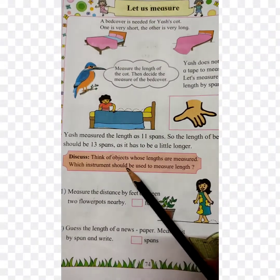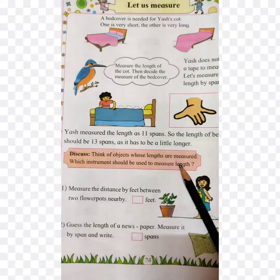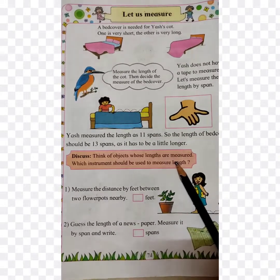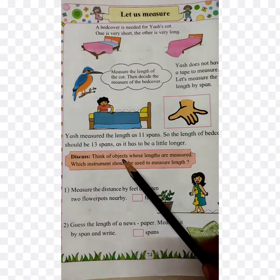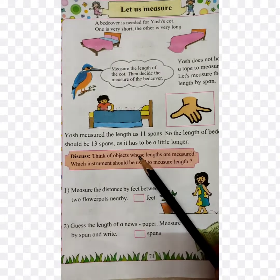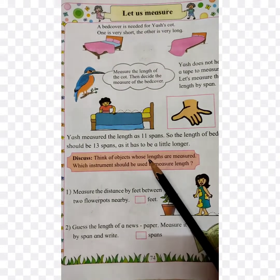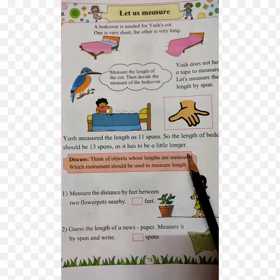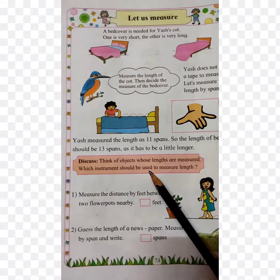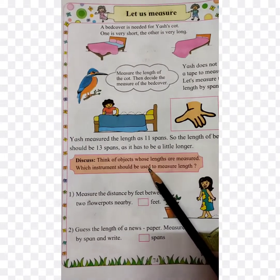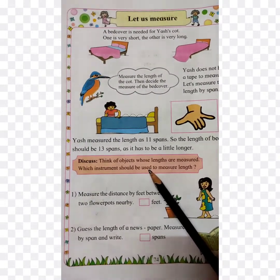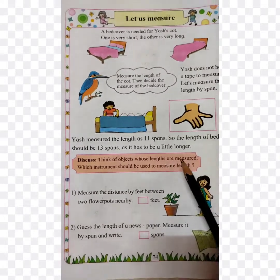Which instrument should be used to measure length? Aisi vastuven jinse measure lene ke liye kisi cheez ka upyog kar sakte hain — jaise ki tailor ki dukaan mein tailor apne kapde ka measure lekar cutting karta hai, woh kya karta hai? Major tape se kapde ki lambai, length aur width maapata hai. Usi tarah, students, jo scale ka sahara lete hain. Alag-alag jagah pe alag-alag measurement waale chizon ka use hota hai.